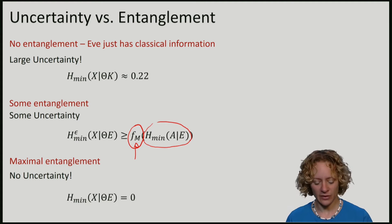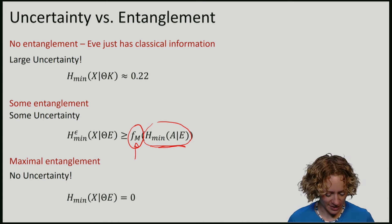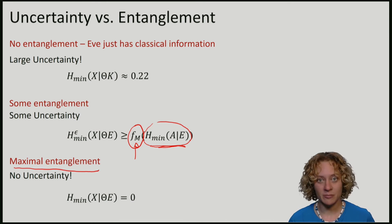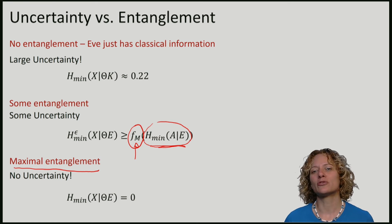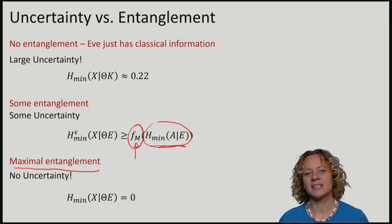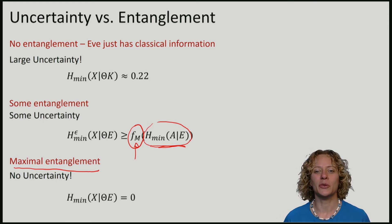If you remember the fully quantum min entropy, then the min entropy between A and E in fact measures exactly how far, or how close, Eve can bring the state rho to the maximally entangled state, maximum entanglement, by performing an operation on E. And for the maximal entangled state, we have no uncertainty.